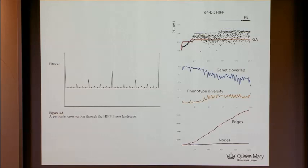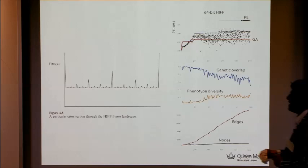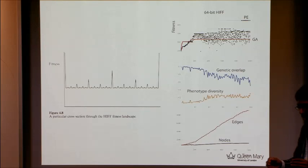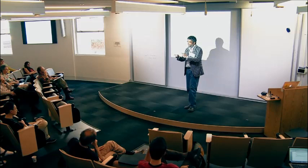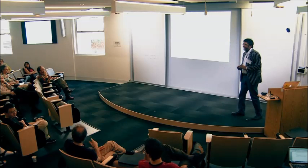The HIF stands for Hierarchical If-and-only-if. It produces a really pathological fitness landscape with lots of local optima. The two best solutions are either all-ones or all-zeros. It's a hierarchical problem — you look at pairs of adjacent loci: if they're both one or both zero, that produces a one at the next level; if they're zero and one, that produces a zero at the next level. You keep doing that and scale for different levels. You can think of it as a hierarchical parity function.